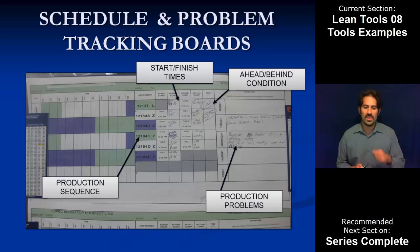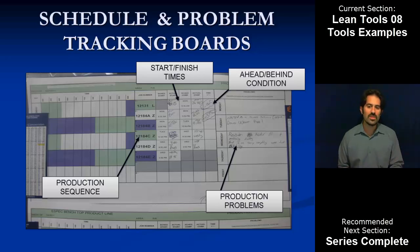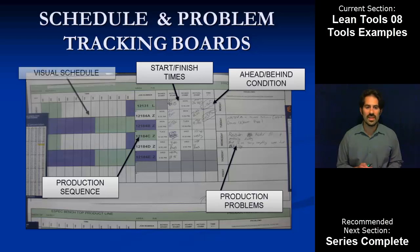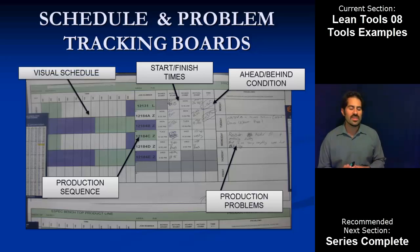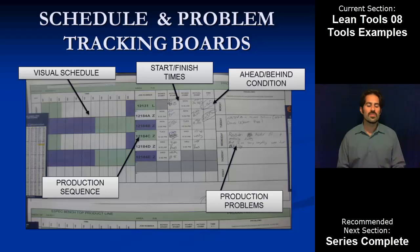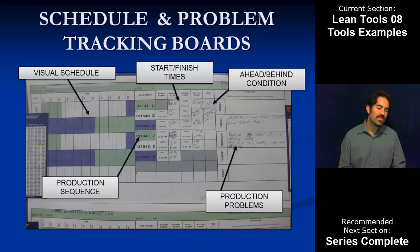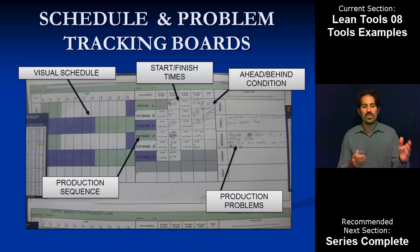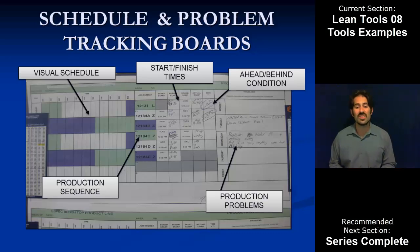Also on the board, we track our production problems. Whatever problems showed up during the day, it's an open-ended way to capture those, and it becomes a communication tool back and forth as to what we're doing to solve them. Just like with standardized work, we like to incorporate some sort of visual component to make it easier — status at a glance. It's not necessarily critical but it does help to make things visual and easier to see.